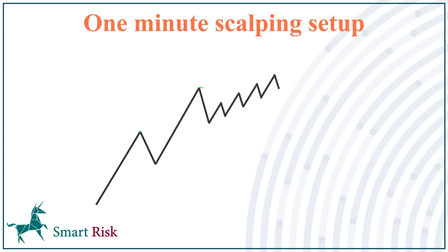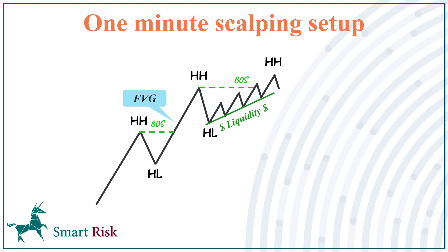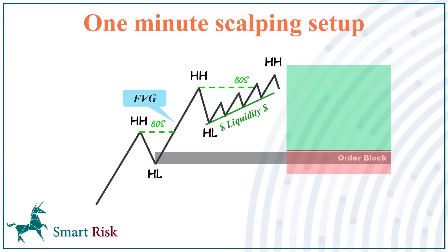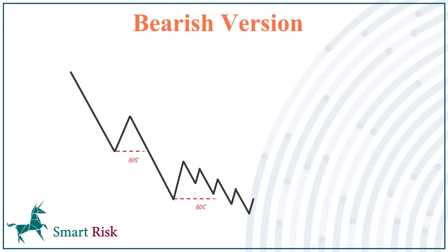Imagine we are in an uptrend and the latest move breaks the market structure to the upside but has no fair value gap. Looking at the left side, we realize there is a gap precisely below the swing low and a valid order block zone. In this case there is a higher chance for the price to break below the swing low, grab the liquidity, and continue pushing up when it taps into the order block demand area. So when this pattern forms, we will place our buy order a spread size above the order block zone and target the next level in front of the price. Our stop will be below the swing low.